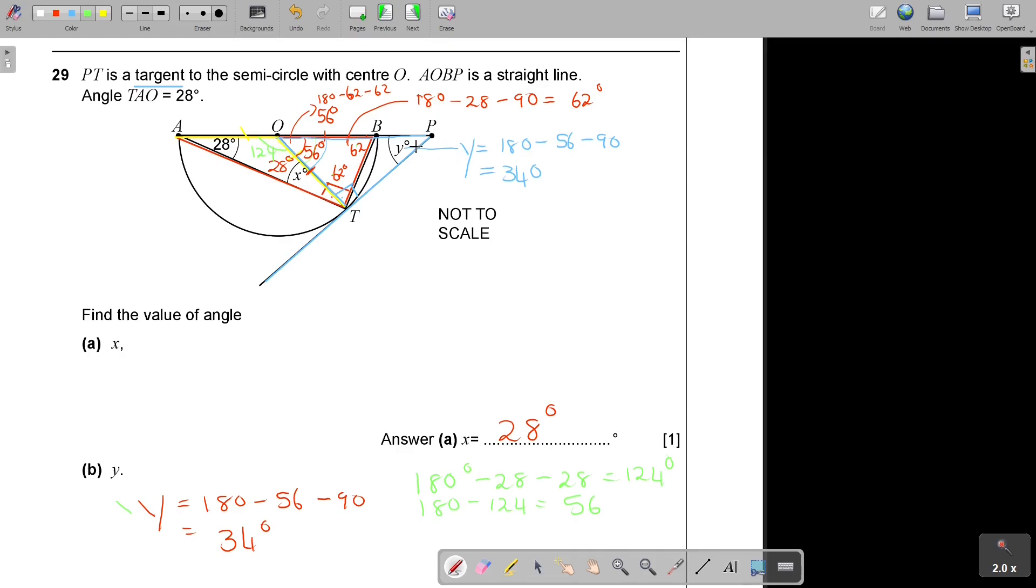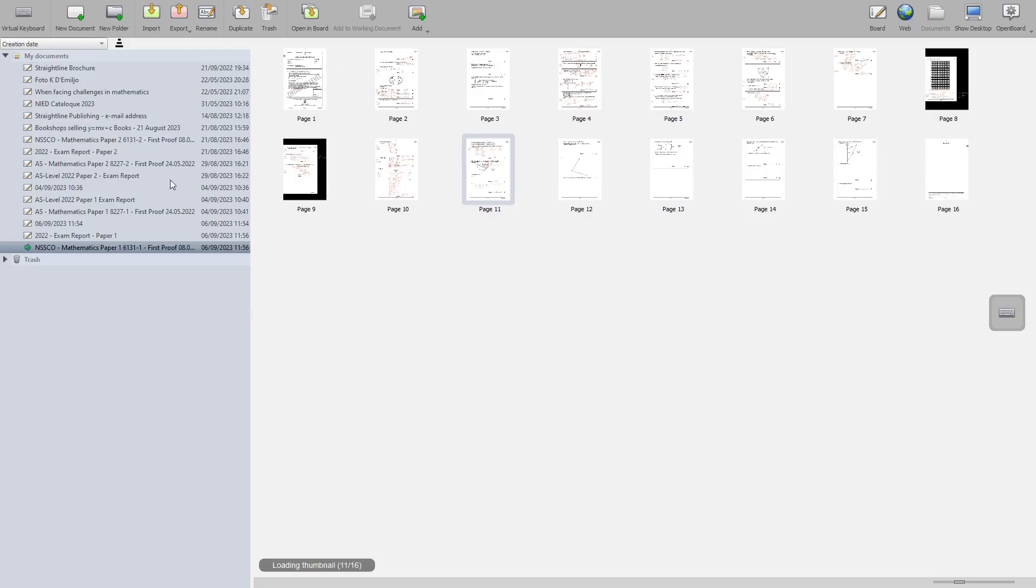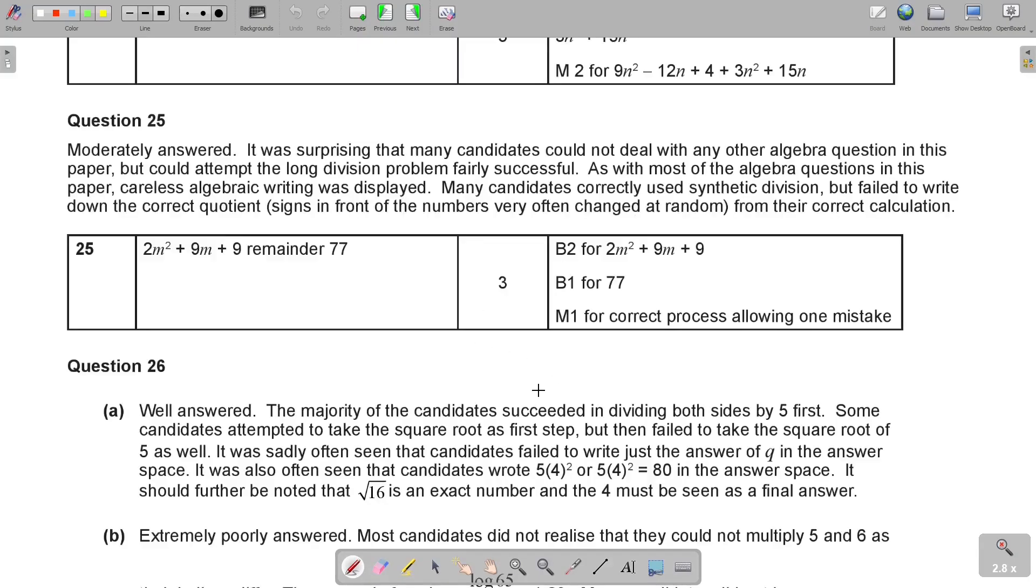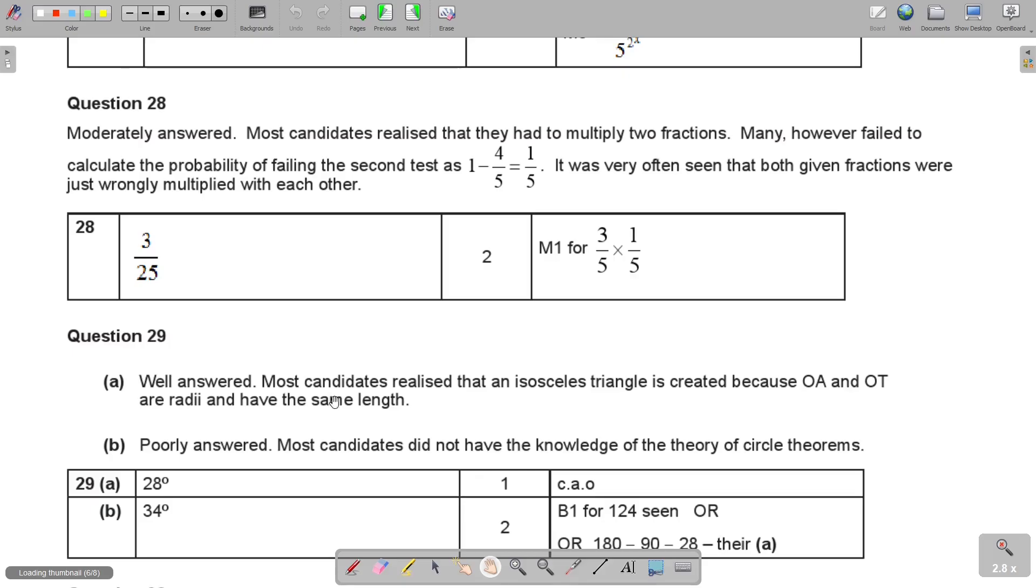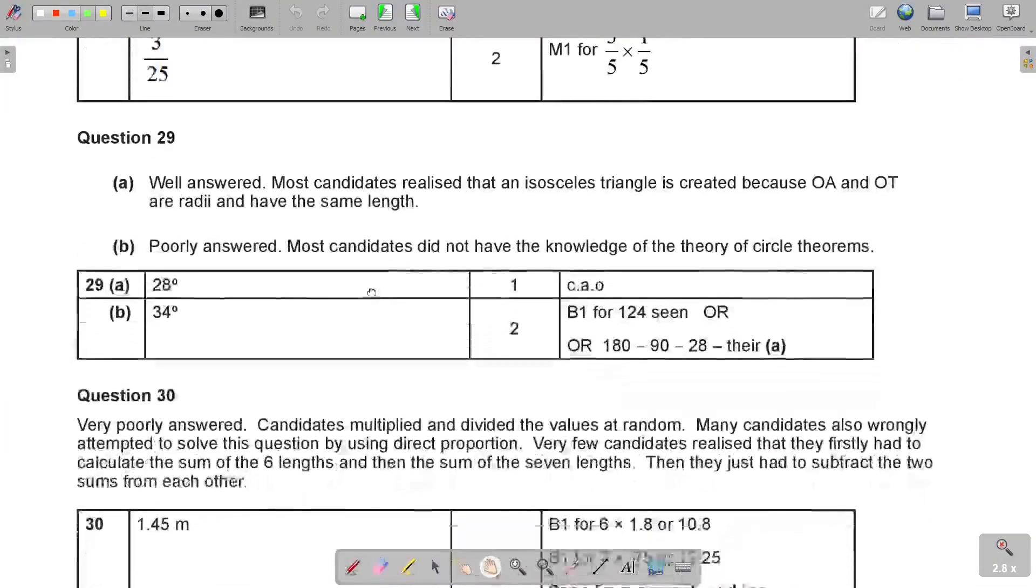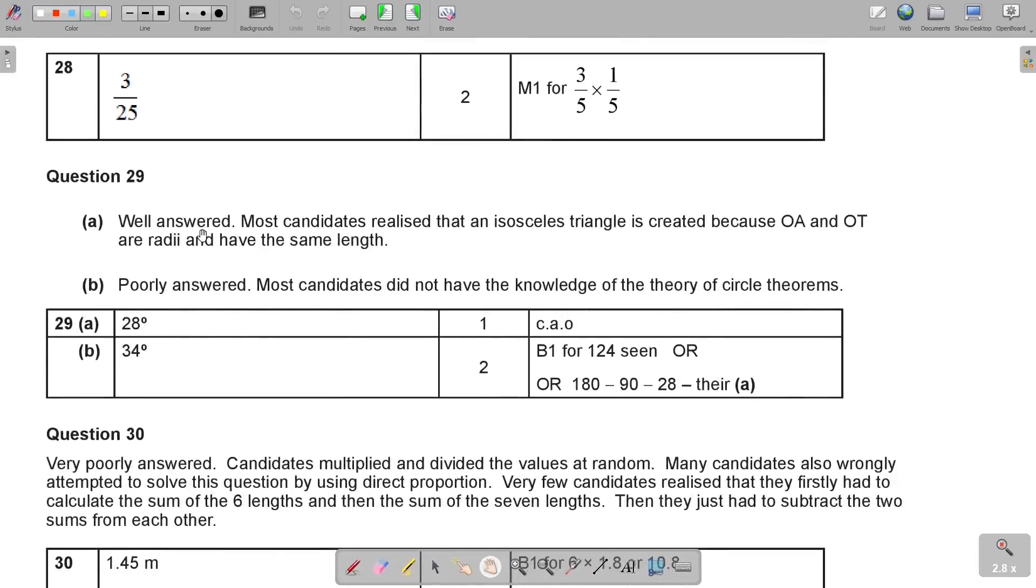And now let's just end this by looking at the report, and seeing what the report is saying of question 29. Let's see if it's still on this page. No, it's on the next page. 27, 29, there it is. The first one was well answered. Most candidates realize that an isosceles triangle is created because OA and OT are radii and have the same length. Next one was poorly answered. So, most candidates did not have the knowledge of the theory of circle theorems, angles of circles. So, basically, and remember, that was, I think most of the time is because they just focus, they want to directly get that value of Y. But work out all the angles on your way to Y, and then you will get the value of Y.